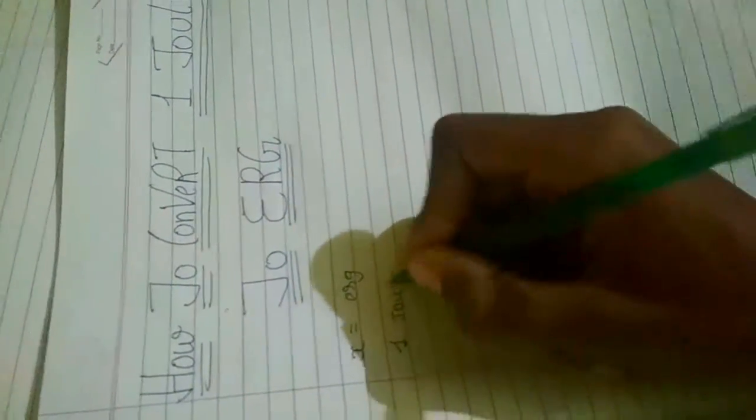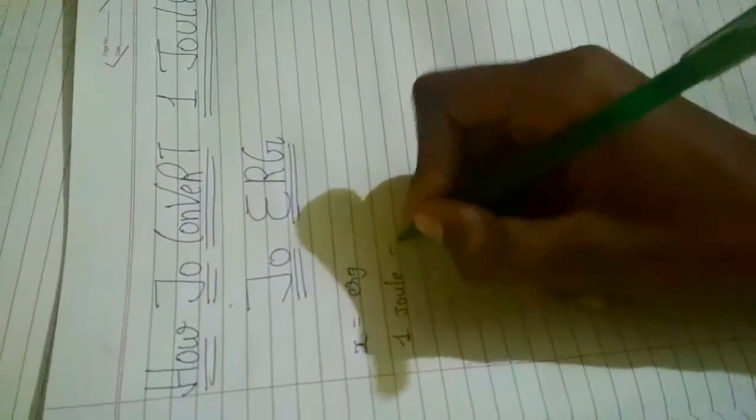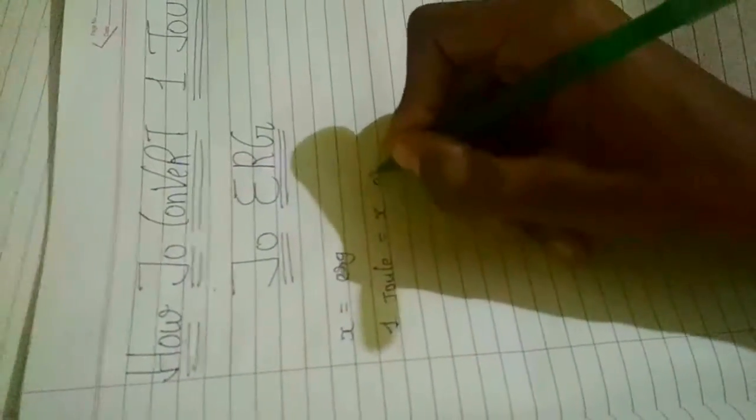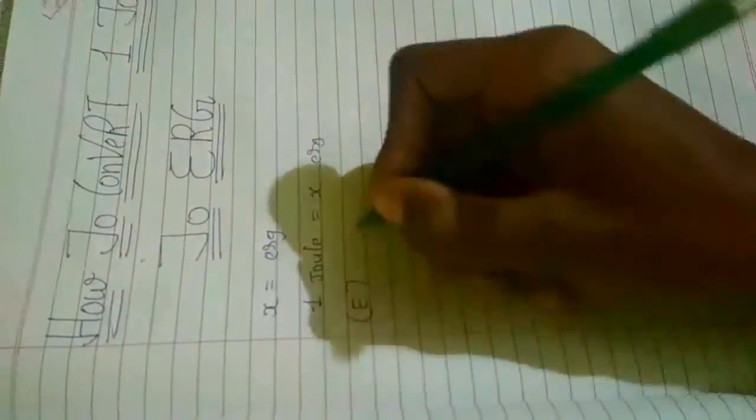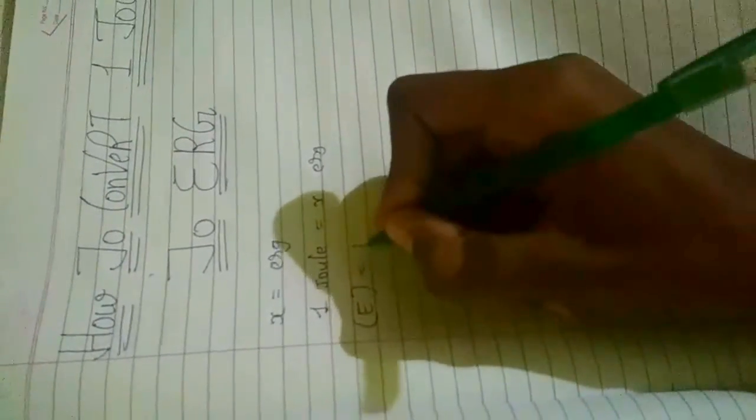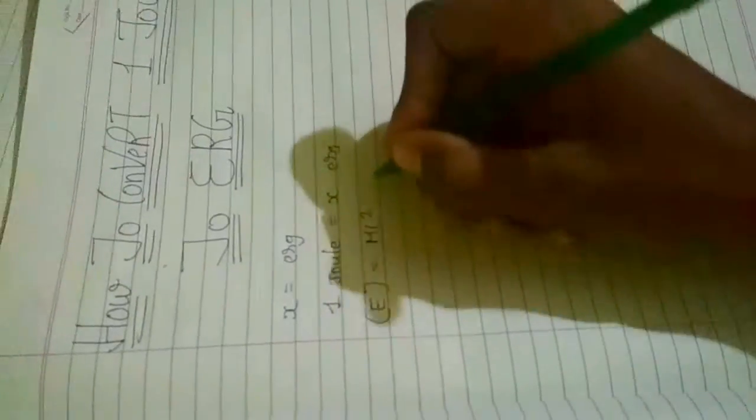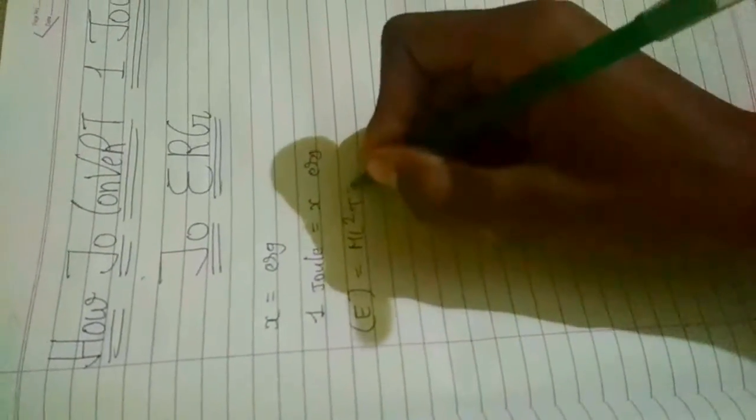And we will have to find one joule equals x erg. So then, as we know that E equals m l squared t to the minus 2.